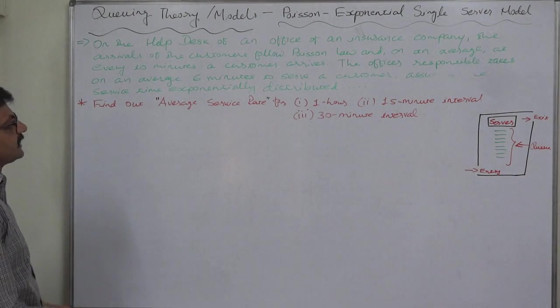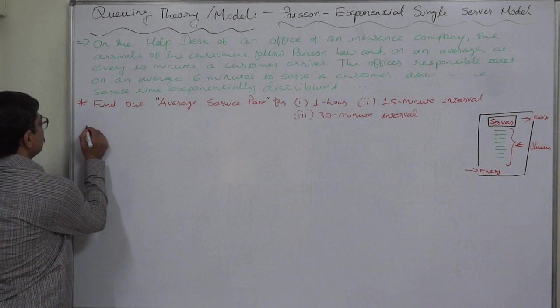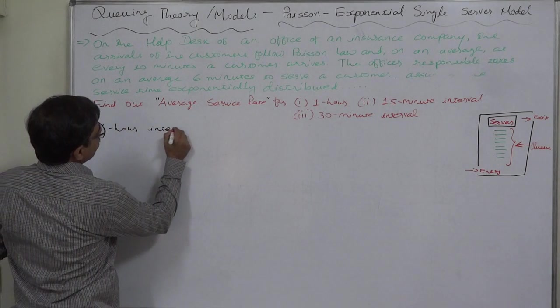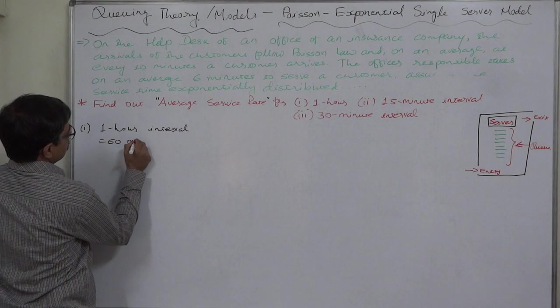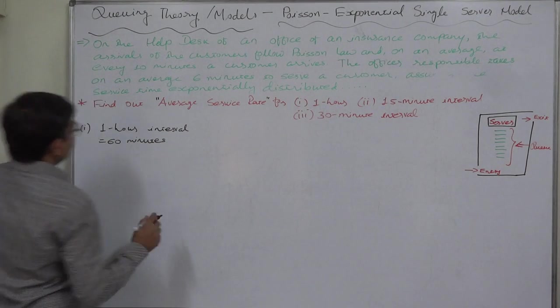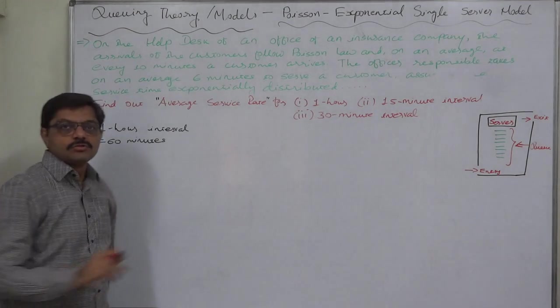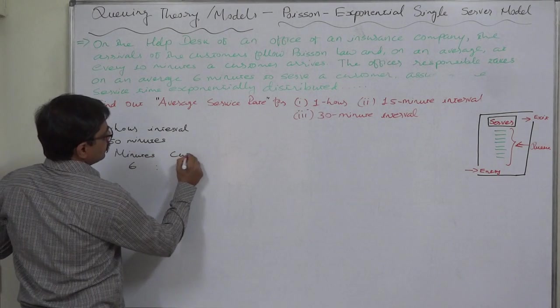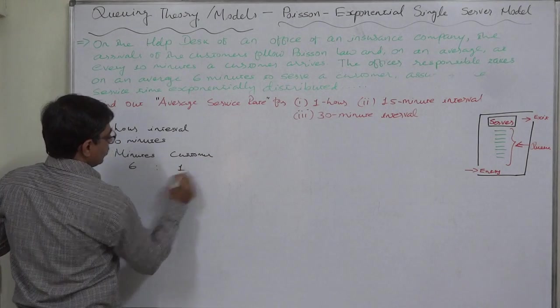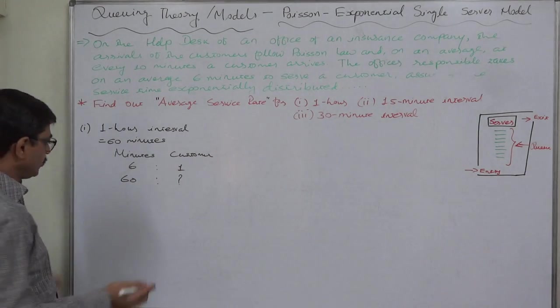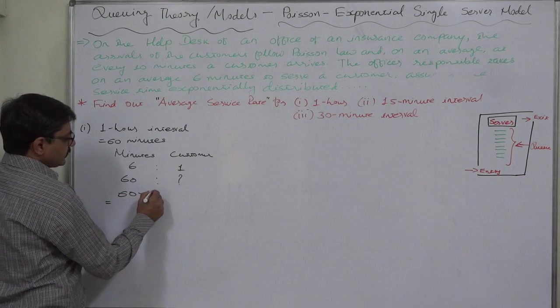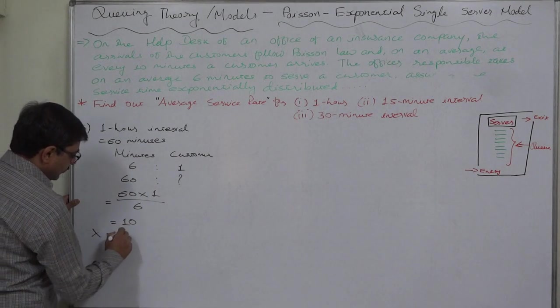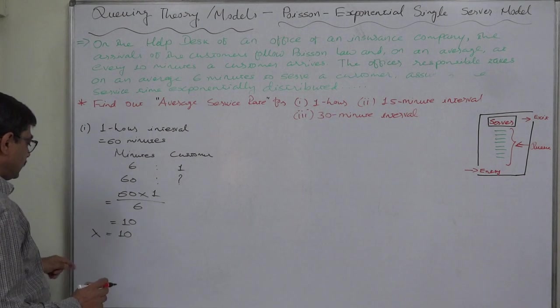Let us first take one hour period or one hour interval, that is 60 minutes. The officer responsible takes on average six minutes to serve a customer. So six minutes is to one customer as 60 minutes is to how many? This is a case of simple ratio and proportion. It will be 60 minutes times one customer divided by six minutes, so it comes to 10. In queuing theory, μ (mu) stands for service rate.